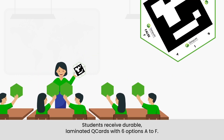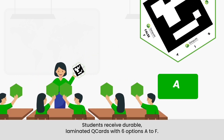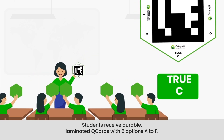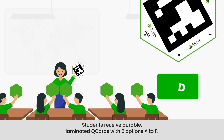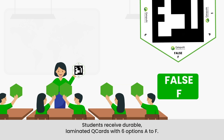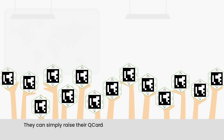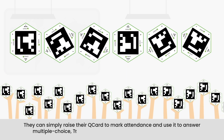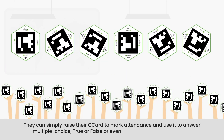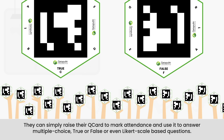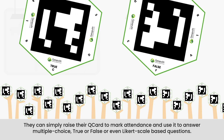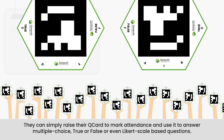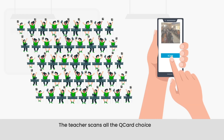With six options — A to F — students can simply raise their cue card to mark attendance and use it to answer multiple choice, true or false, or even scale-based questions. The teacher scans all the cue card choices.